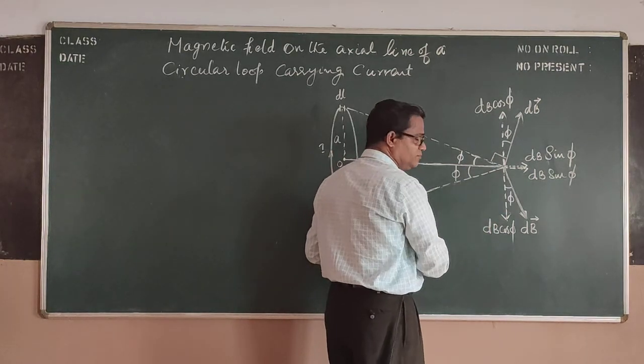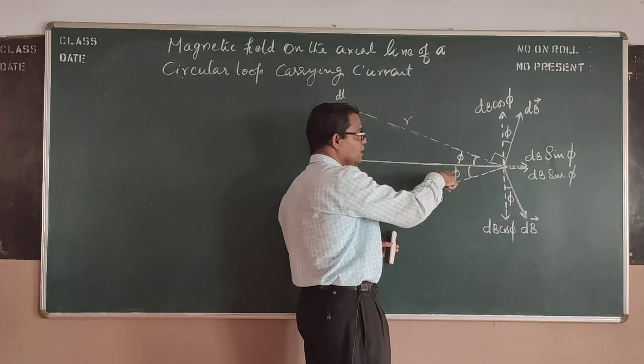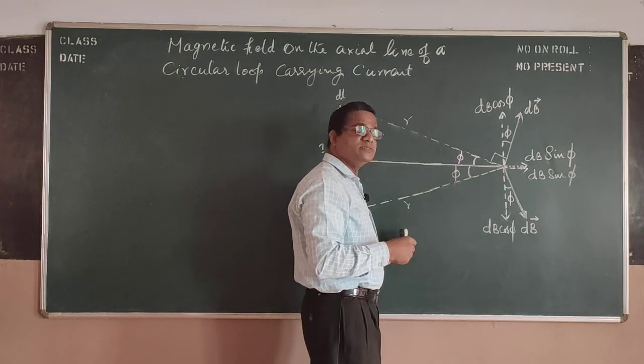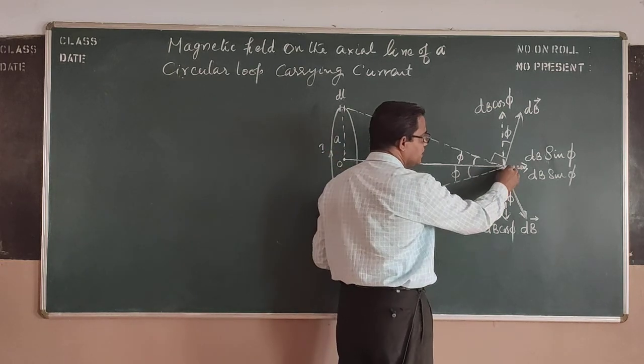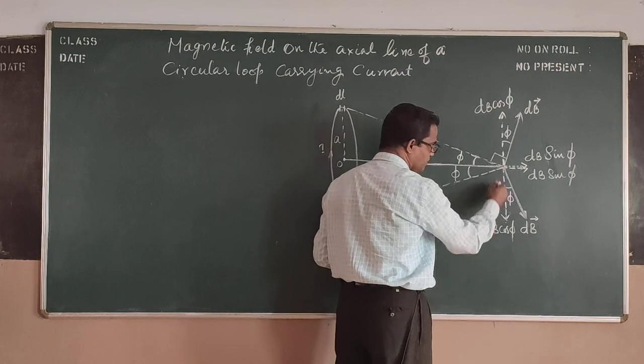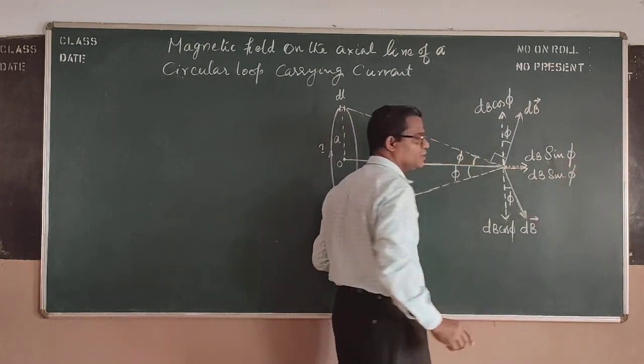I resolve that again. This also angle phi, you know the reason, this is a chord and bisecting it, so this angle and this angle will be the same. Now here, I resolve it into two, DB cos phi vertically downward, and DB sin phi in horizontal direction.